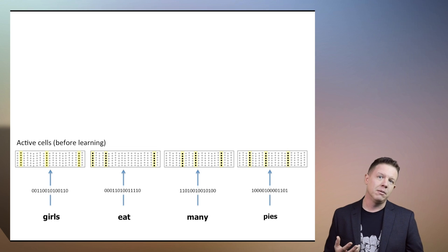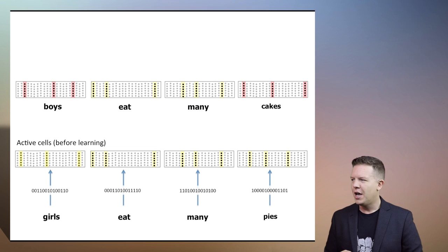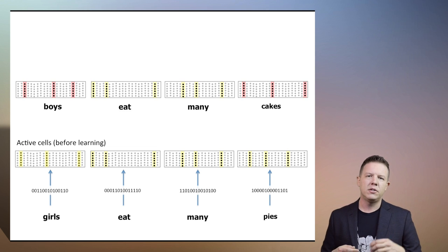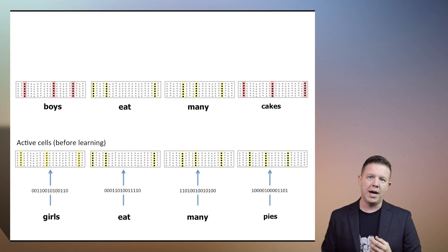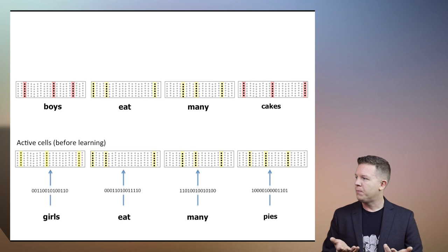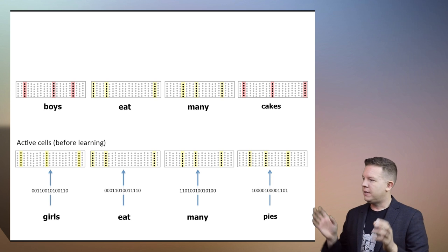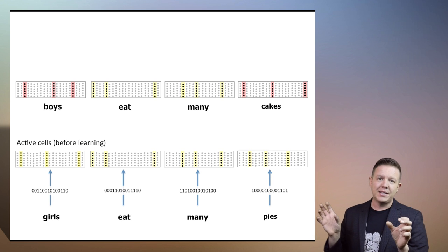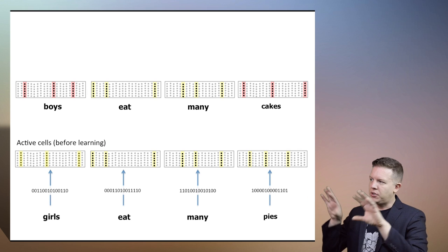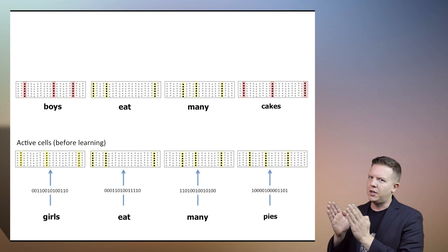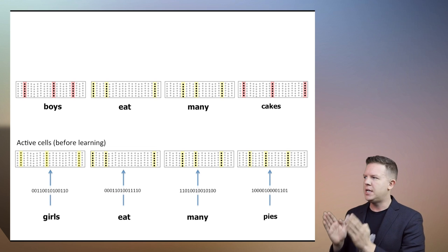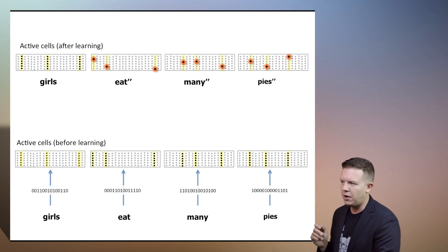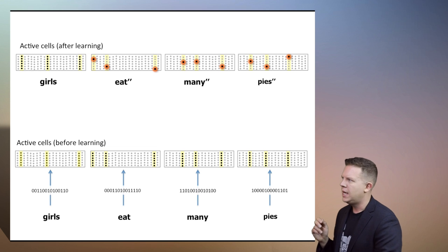'girls eat many pies.' So now we've got these two different spatial temporal patterns that the algorithm has learned. The first and last elements are spatially completely different, but the innermost are very similar, so there's going to be some ambiguity here. So let's talk about this.